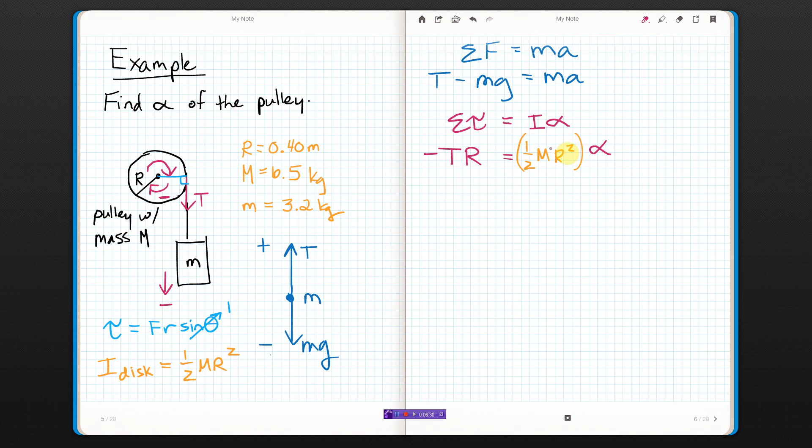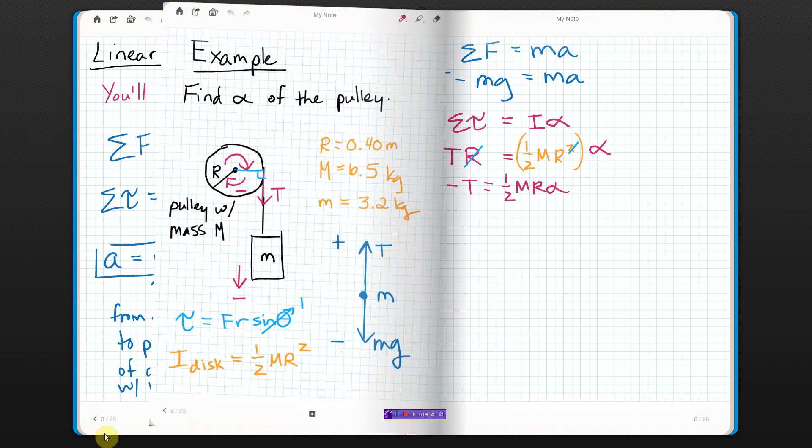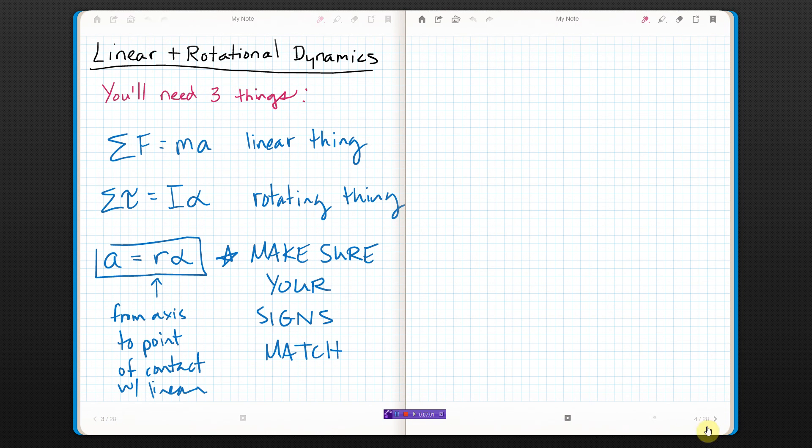So that is Newton's second law for rotation all filled out. I can do a little bit of simplification. Like I've got an R on both sides right there, which means that negative tension should equal one-half mass of the pulley, radius of the pulley, times angular acceleration. I'm going to wait to do anything more with that. Let's look at the last equation, that one.